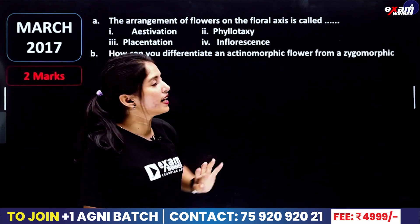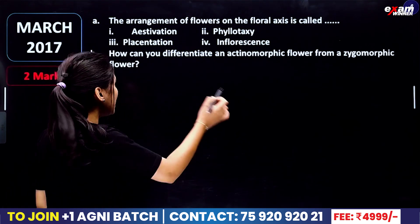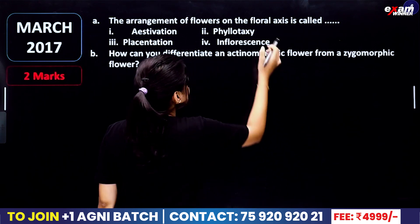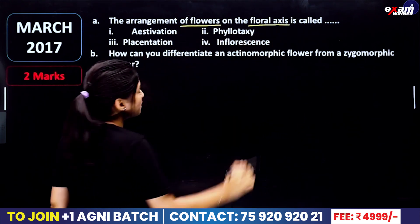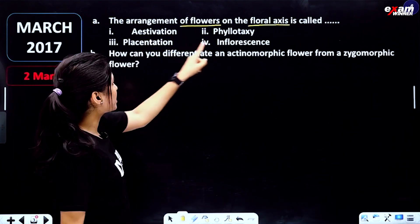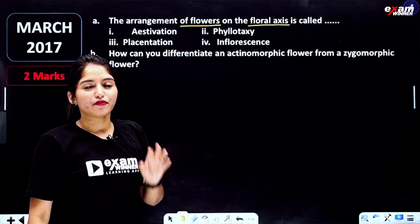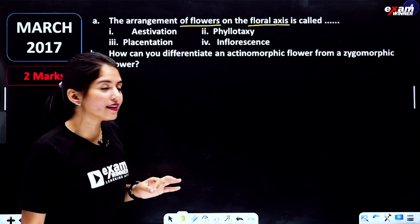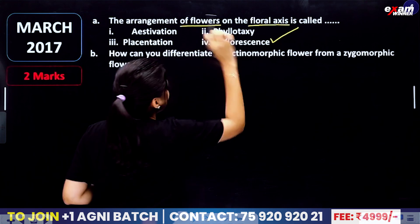Arrangement of flowers on the floral axis is called dash. What is the name of the arrangement of flowers on the floral axis? The options are: acervation, phyllotaxy, placentation, or inflorescence. Inflorescence is the right answer.